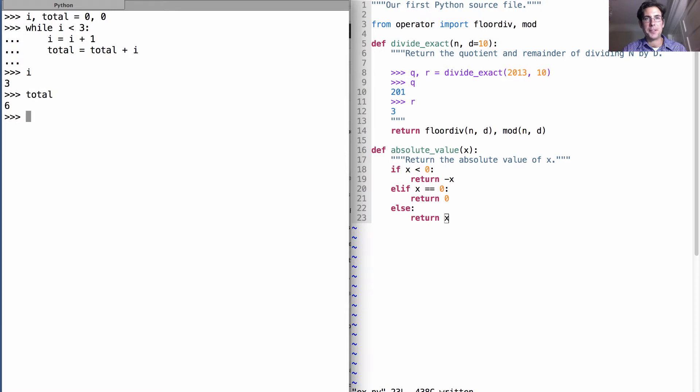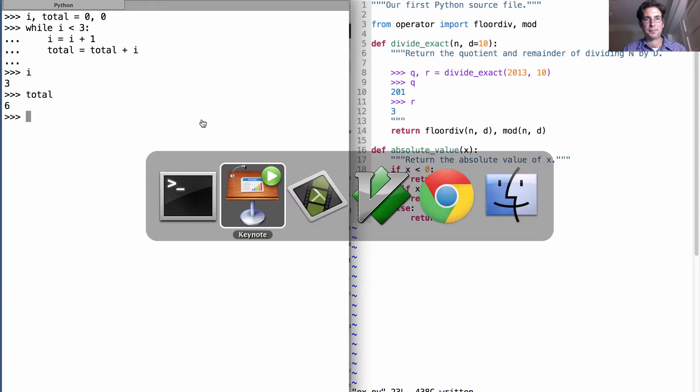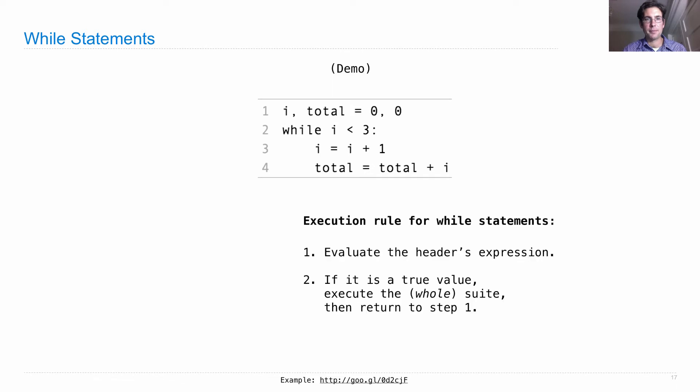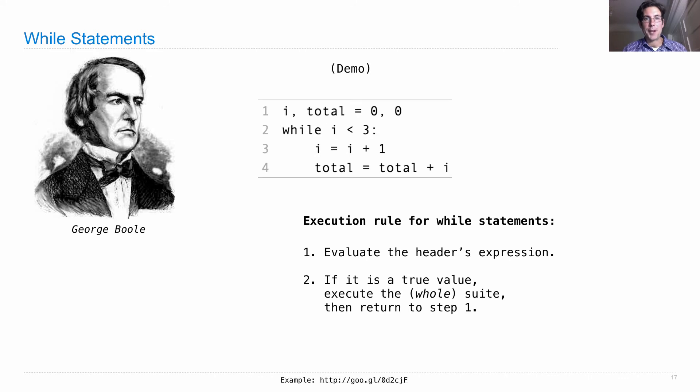Let's understand exactly how that worked. Here's the execution rule for while statements: evaluate the header's expression. If it is a true value, execute the whole suite, then return to step 1.